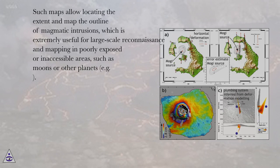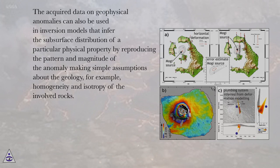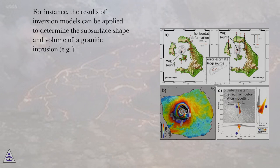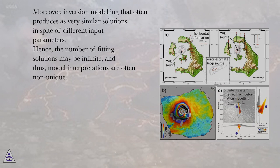The spatial resolution of the data mainly depends on the contrast in physical properties between the target and the country rock. The acquired data on geophysical anomalies can also be used in inversion models that infer the subsurface distribution of a particular physical property by reproducing the pattern and magnitude of the anomaly, making simple assumptions about the geology — for example, homogeneity and isotropy of the involved rocks. The results of inversion models can be applied to determine the subsurface shape and volume of a granitic intrusion. The main limitation of geophysical mapping at depth using inversion modeling is that data acquired at the earth's surface, more or less in 2D, is used to interpret the 3D distribution of physical properties. Moreover, inversion modeling often produces very similar solutions in spite of different input parameters.